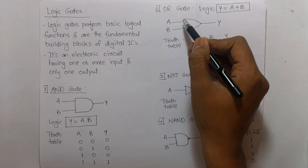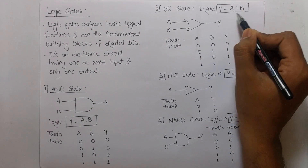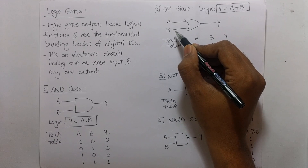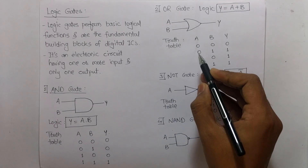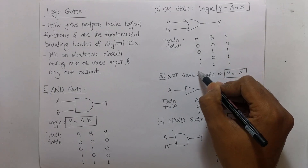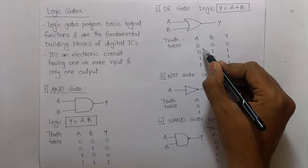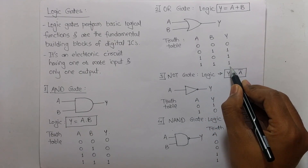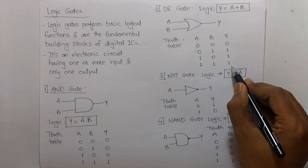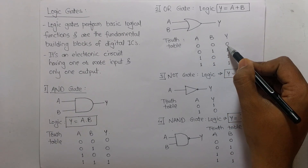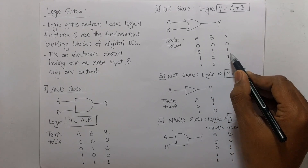Next is the OR gate. The logic of OR gate is Y equals A plus B. This means even if one of the two inputs is 1 or ON, the output Y will be ON. In the truth table: 0+0=0, 0+1=1, 1+0=1, and 1+1=1. In OR gate, only when both inputs are 0 will the output be 0; for all other input combinations, the output will be 1.